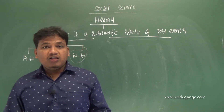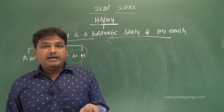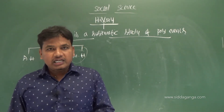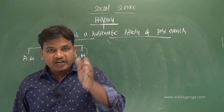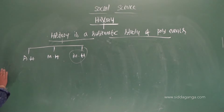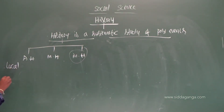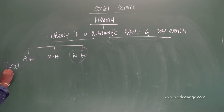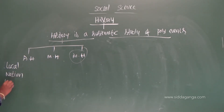With respect to geographical area, history can also be classified into three types: one is local history, the next is national history, and the next is world history.